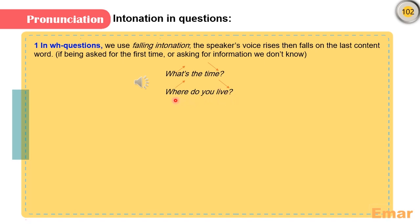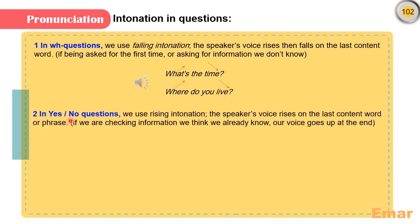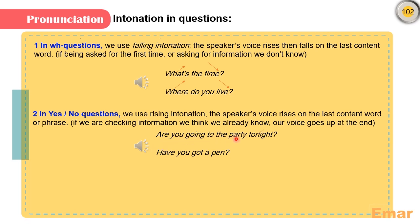Number two: in yes-no questions, we use rising intonation. The speaker's voice rises on the last content word or phrase. If we are checking information we think we already know, our voice goes up at the end. 'Are you going to the party tonight?' 'Have you got a pen?' Notice how the intonation rises at the end of these questions because they are yes-no questions.